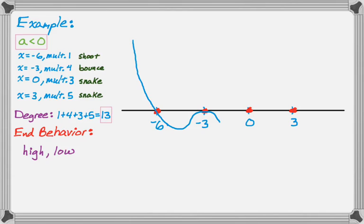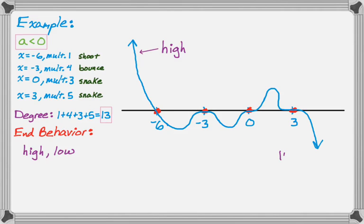Going up to 0, it passes through the axis and snakes through — changing shape. Then it turns around, goes back through the axis at 3, and snakes through again, but even flatter than it did at 0. The graph started high and ended low, and each behavior on the axis follows what we wanted. We definitely got the graph we were looking for.